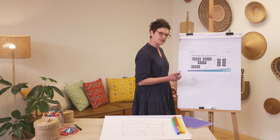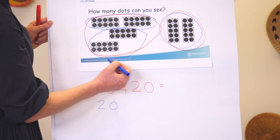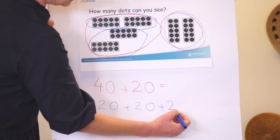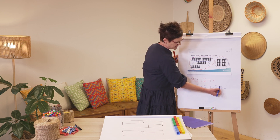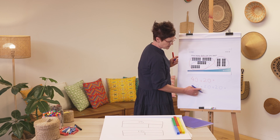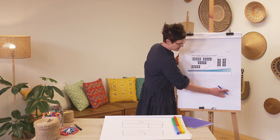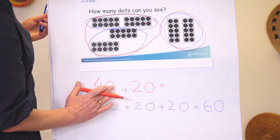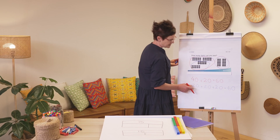The other way I saw it: two lots of ten, two lots of ten, and two lots of ten. So 20 plus 20 plus 20 — let's think about two plus two plus two — makes 60. And 40 plus 20: the four and the two give me six, so this must be 60. Both of these are correct!